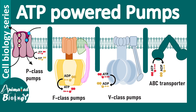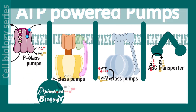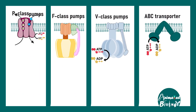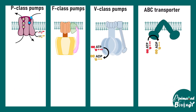In this short lecture we'll talk about ATP-powered pumps. They are one type of membrane carriers or transporters which require ATP hydrolysis to function. There are four classes of pumps we are going to talk about: P class ATPase, F class pumps, V class pumps, and ABC transporters.